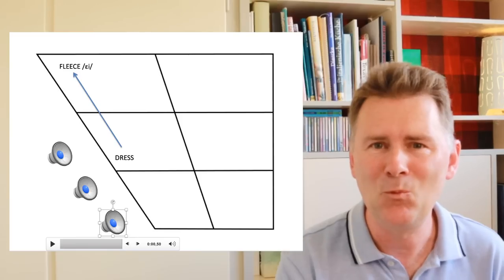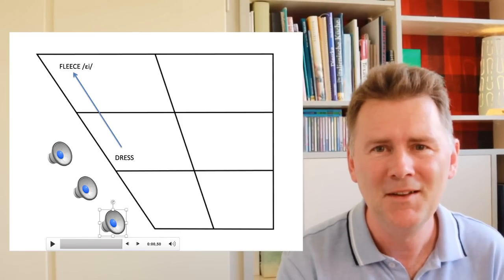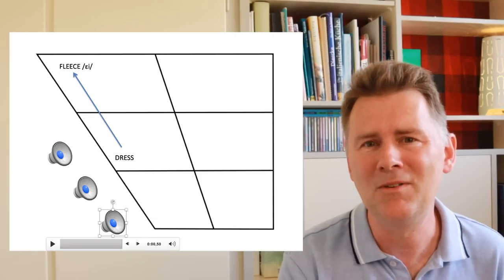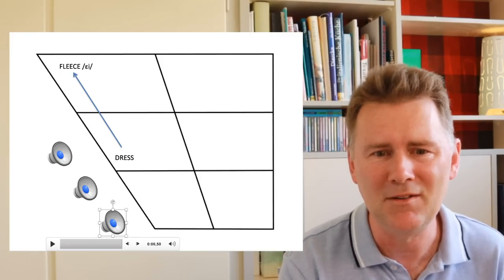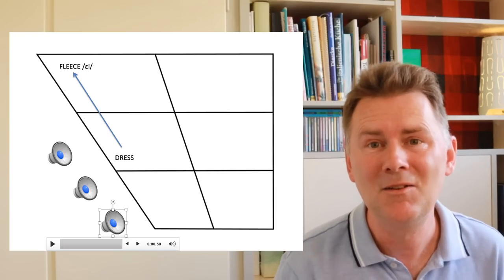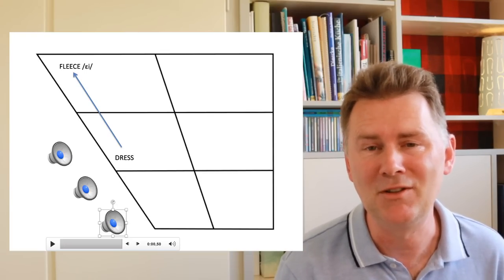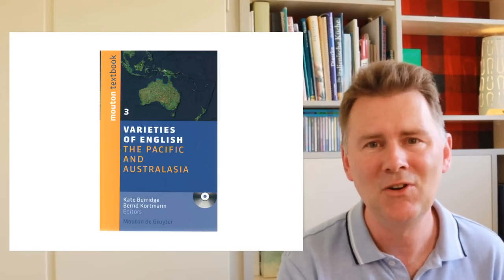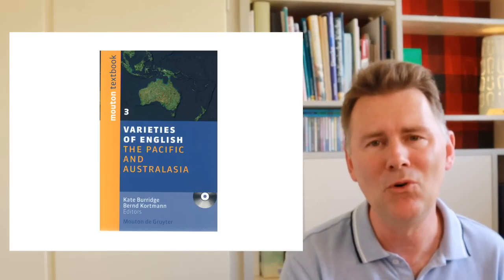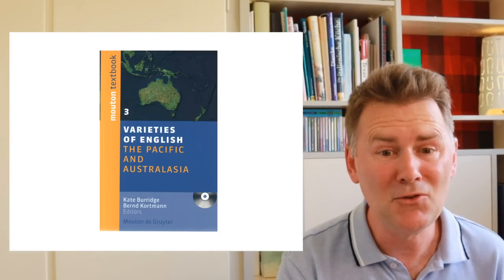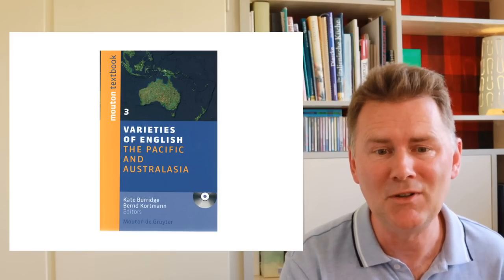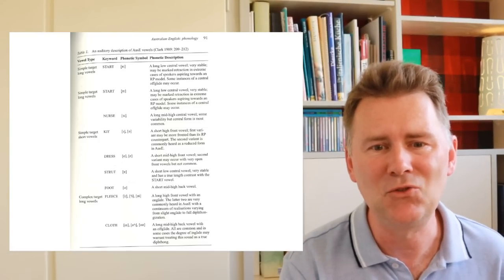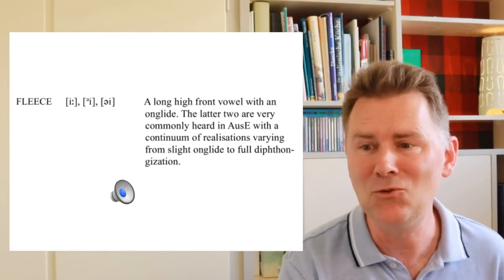However, there's a complication. When you listen to the three words, you actually notice that they are not completely identical. Each of them sounds a little different, and this is speaker internal variation. Let's turn to a professional resource, namely the Handbook of Varieties of English. I will talk about this resource in more detail in later videos. In this volume we actually find a description of Australian vowels and among them a description of the Australian fleece vowel. Let me zoom into that.